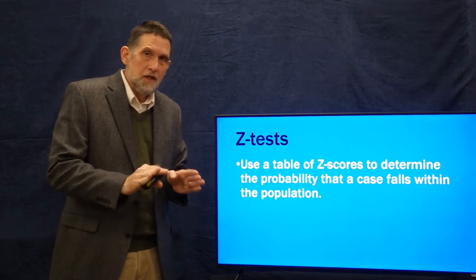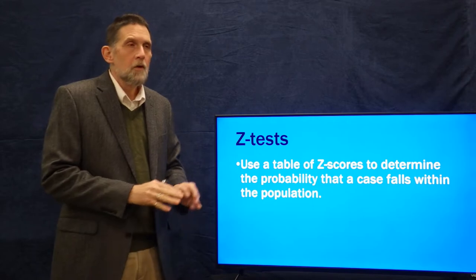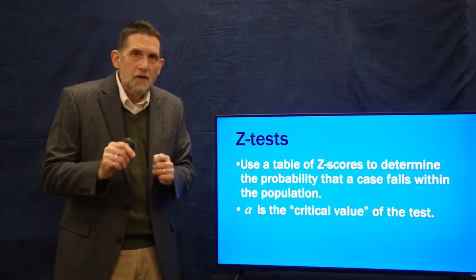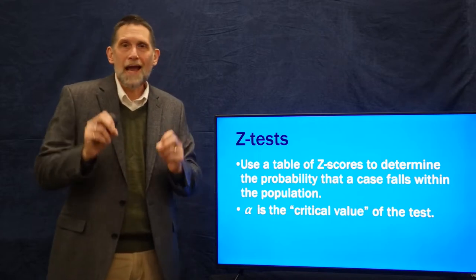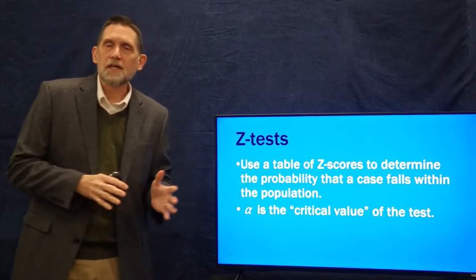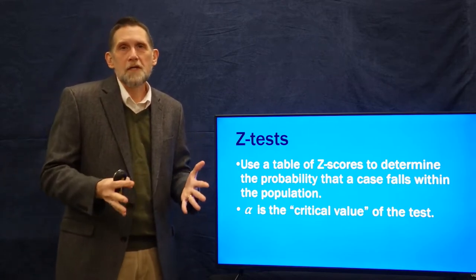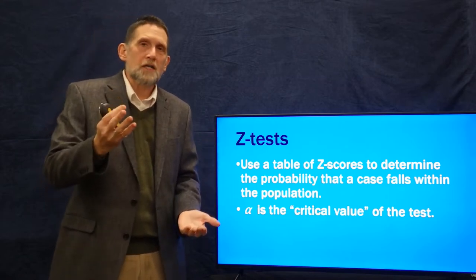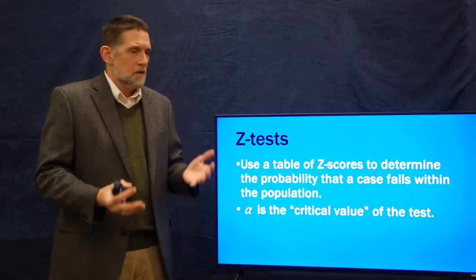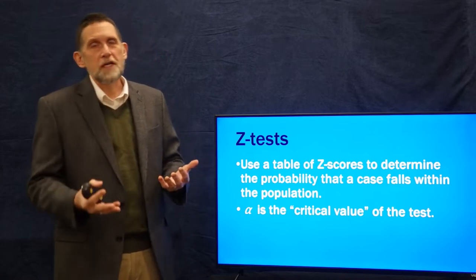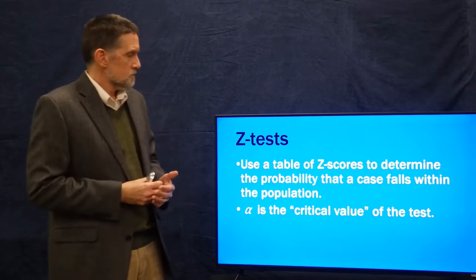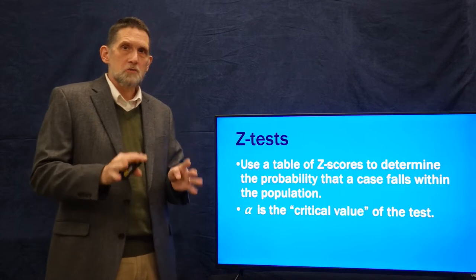The null hypothesis is the case is part of the population. The research hypothesis is the case is not part of the population. The value we assign to that probability is what we call alpha, or the critical value. In social science research, it's set at 0.05 or 5%. In science in general, there are usually three alpha values: 0.01, 0.05, and 0.1. We normally use 0.05 in social science.